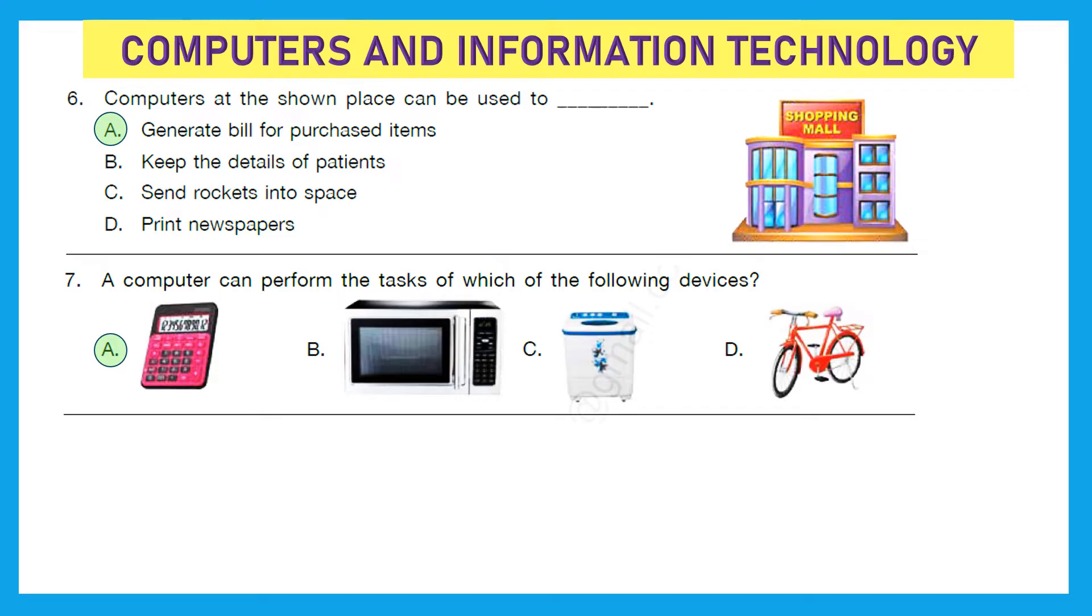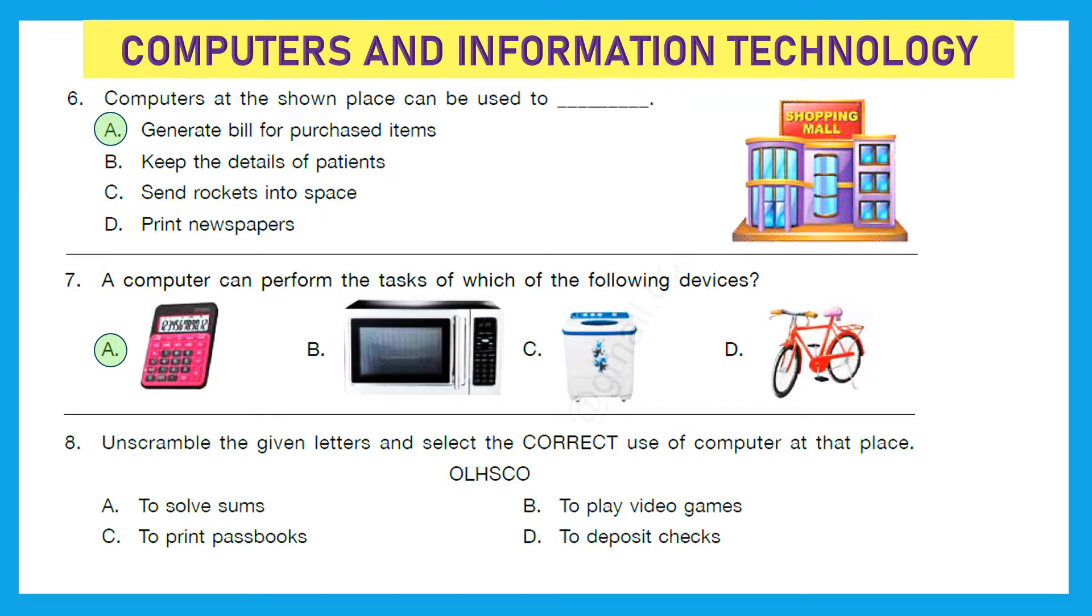Question 8: Unscramble the given letters and select the correct use of computer at that place. So let's first unscramble the letters and we get school. Now we have to find the correct use of computer at school. To solve sums, to play video games, to print passbooks, or to deposit checks. And the right answer is option A, to solve sums.